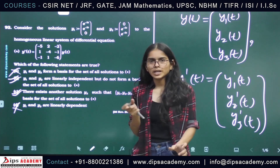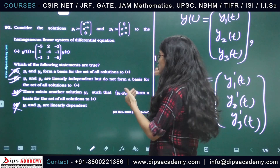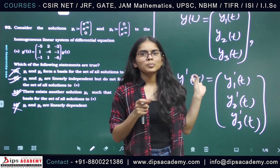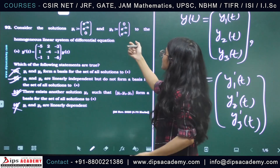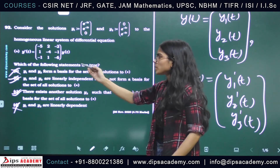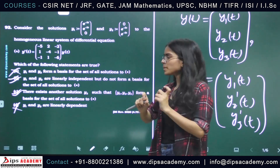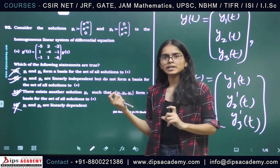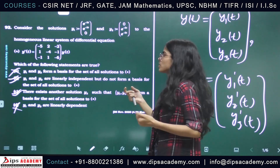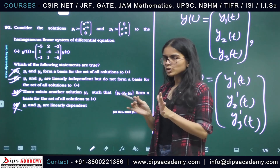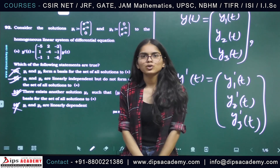So options A and D are incorrect, and options B and C are correct. In the exam, you can quickly note that -3 and -5 are eigenvalues, compute the third as -7 via the trace, confirm all eigenvectors are linearly independent, and conclude B and C are the correct answers. Thank you.